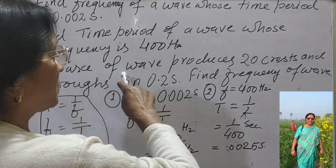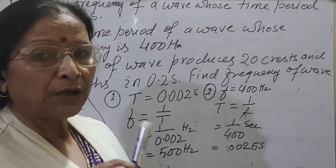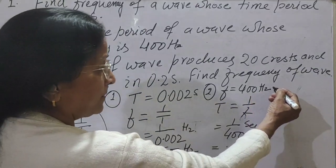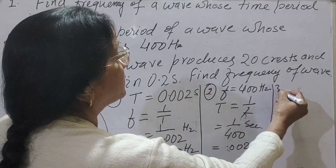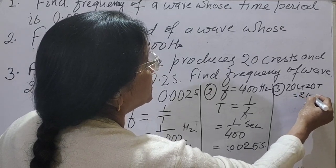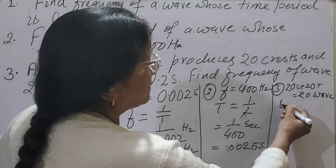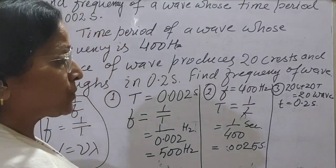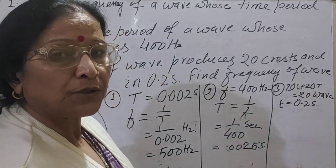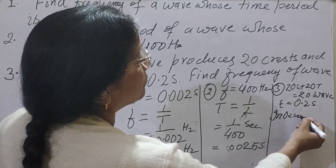Third question: a source of sound produces 20 crests and 20 troughs in 0.02 second. One crest and one trough together form one wave. So 20 crests and 20 troughs together make 20 waves. So 20 waves are produced in 0.02 second — time is given as 0.02 second.